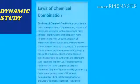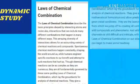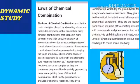Laws of chemical combination describe the basic principles obeyed by the interacting atoms and molecules. In other words, it is a set of two rules that describe how a chemical reaction will take place between two atoms and molecules. These laws also predict the composition of substances formed. The laws of chemical combination are of two types: first is the law of conservation of mass, and second is the law of constant proportion.